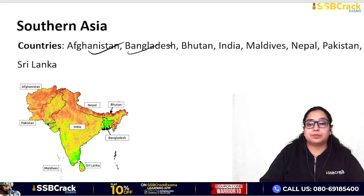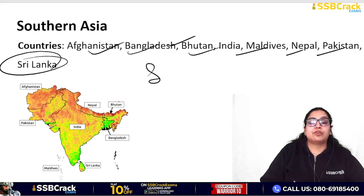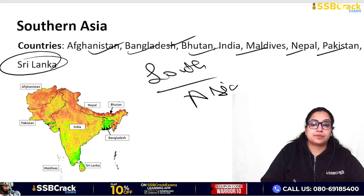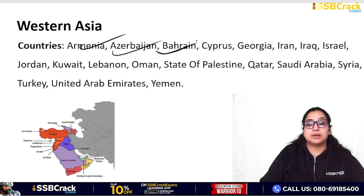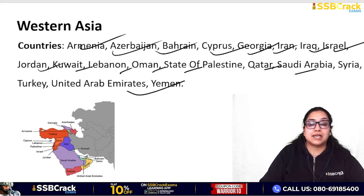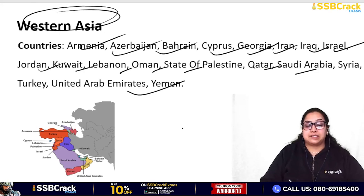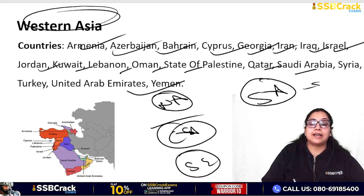Southern Asia, which includes our India, comprises Afghanistan, Bangladesh, Bhutan, India, Maldives, Nepal, Pakistan, and Sri Lanka. Western Asia includes Armenia, Azerbaijan, Bahrain, Cyprus, Georgia, Iran, Iraq, Israel, Jordan, Kuwait, Lebanon, Oman, State of Palestine, Qatar, Saudi Arabia, Syria, Turkey, UAE, and Yemen. India is part of South Asia.